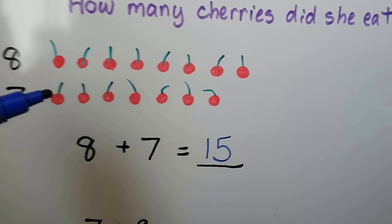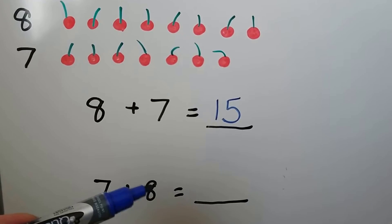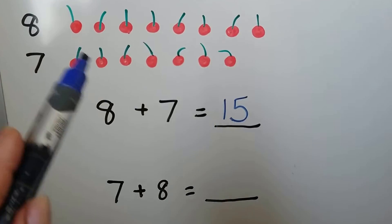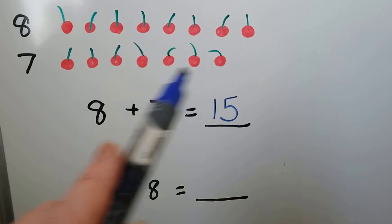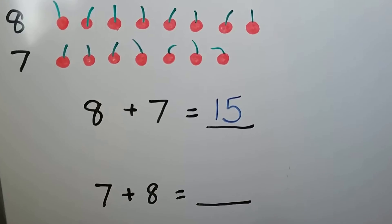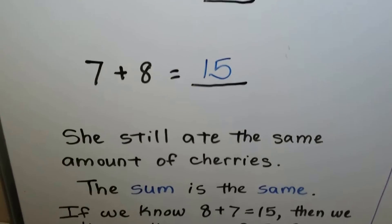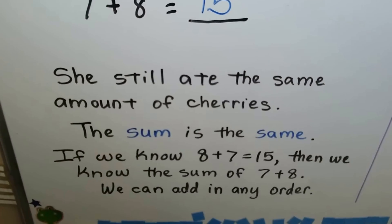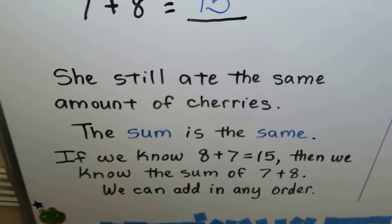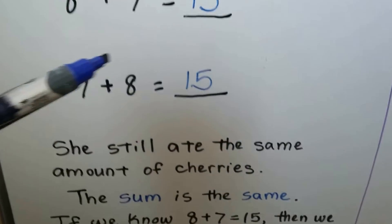What if she ate the 7 cherries first, then she ate the 8 cherries? 7 plus 8. We change the order of the addends and now the 7 is first. We didn't add any more cherries. We didn't take any cherries away — we just changed the order of the numbers. She'll still eat 15 cherries. The sum is the same. If we know 8 plus 7 equals 15, then we know the sum of 7 plus 8. We can add in any order. The sum will stay the same.